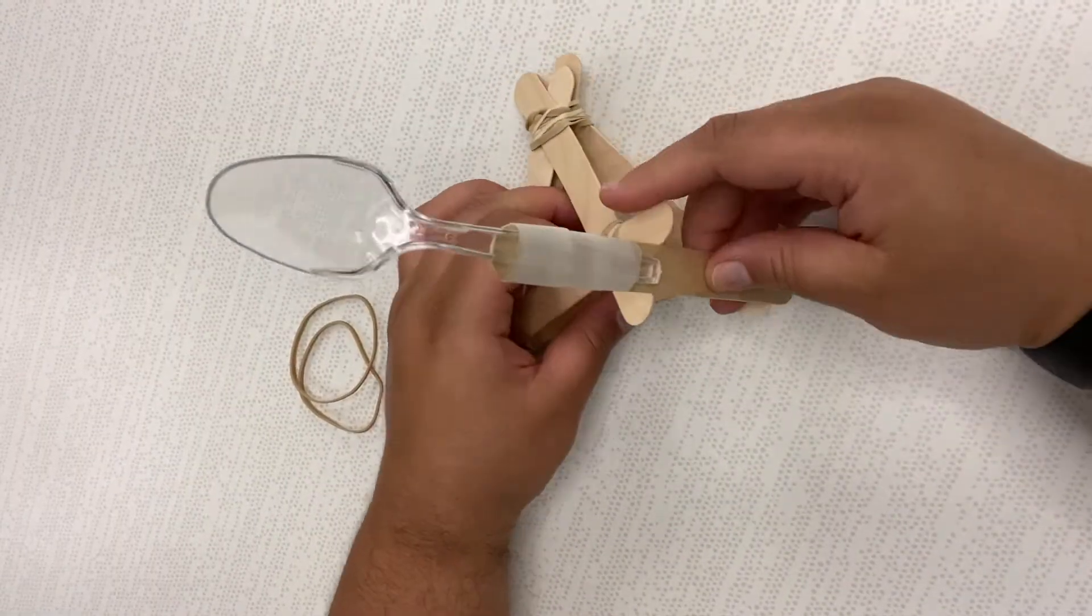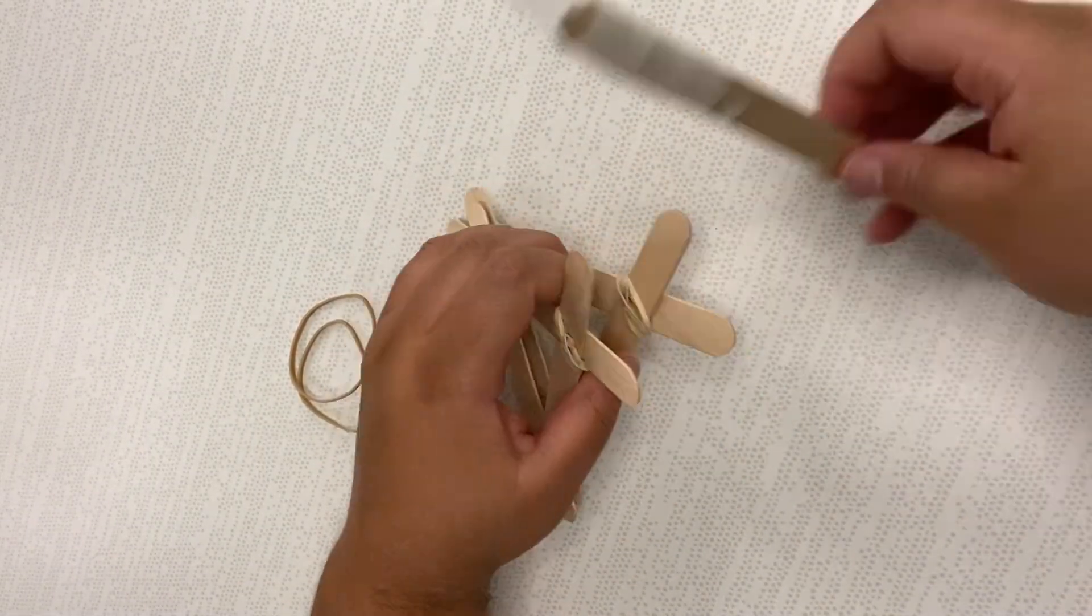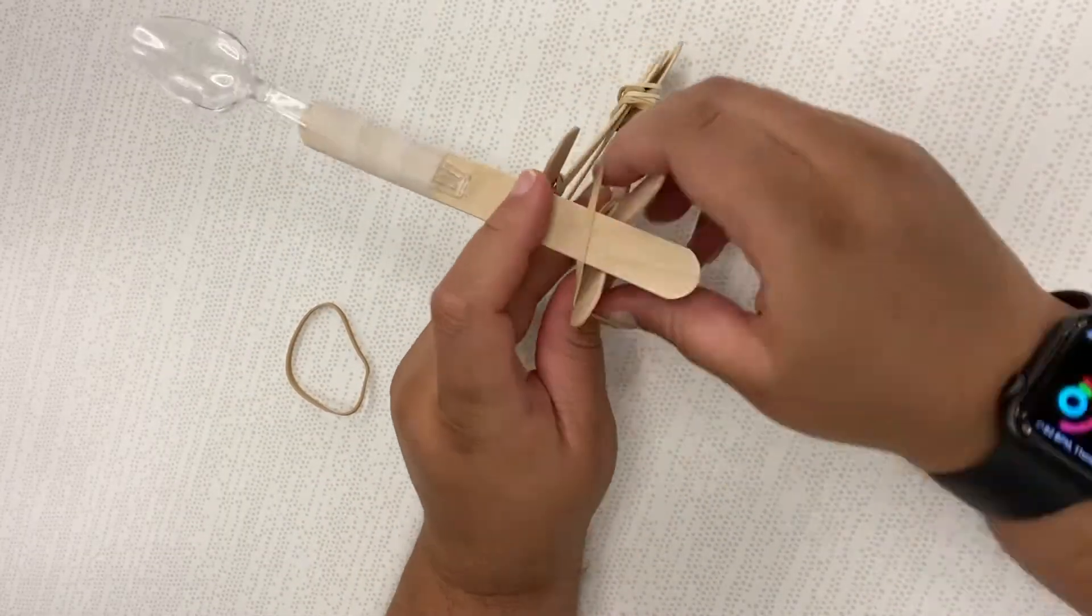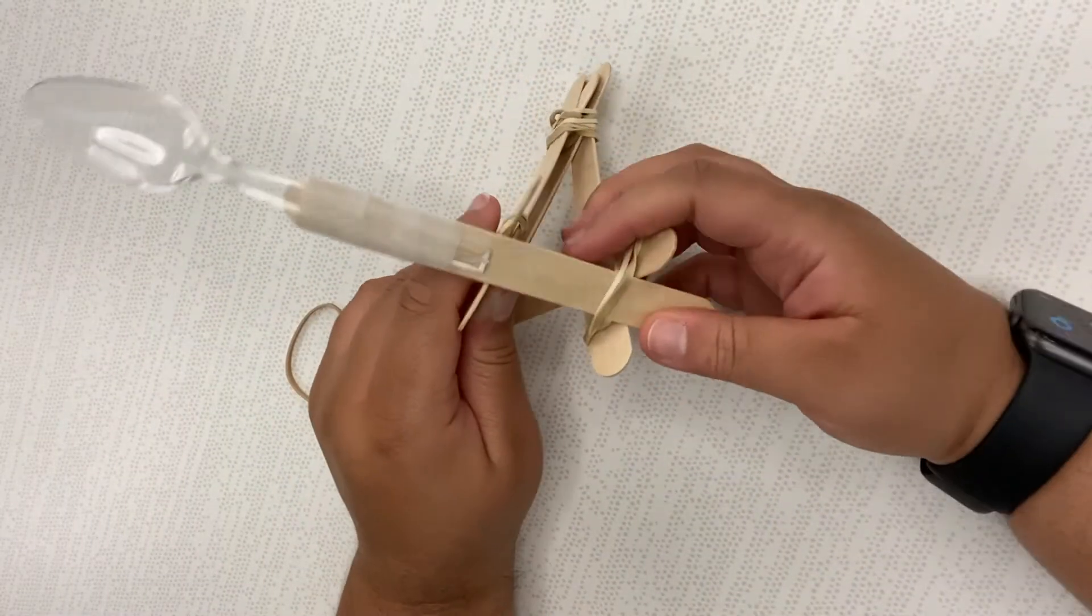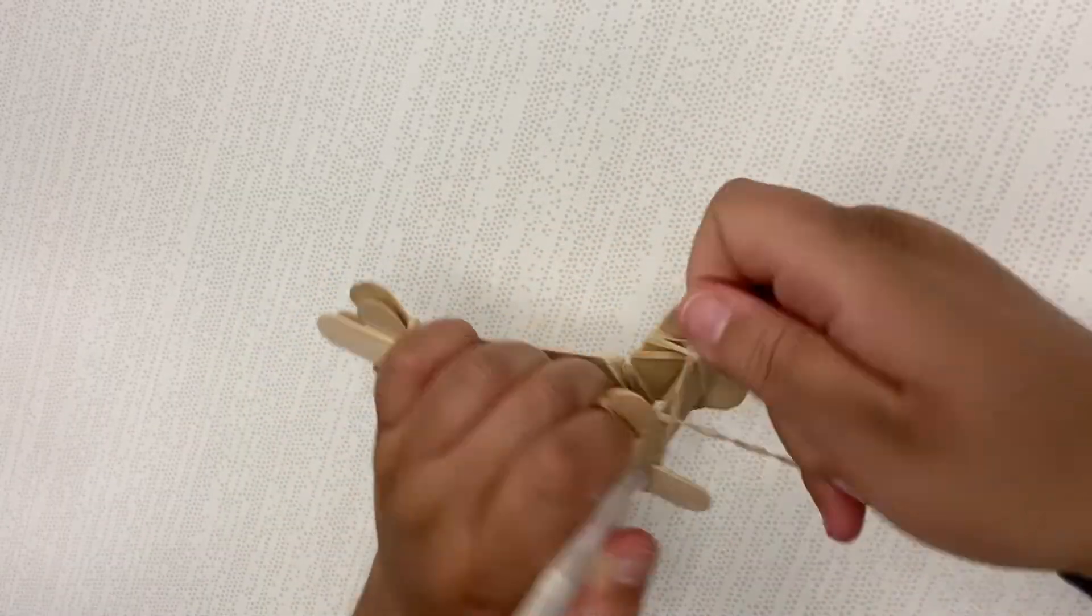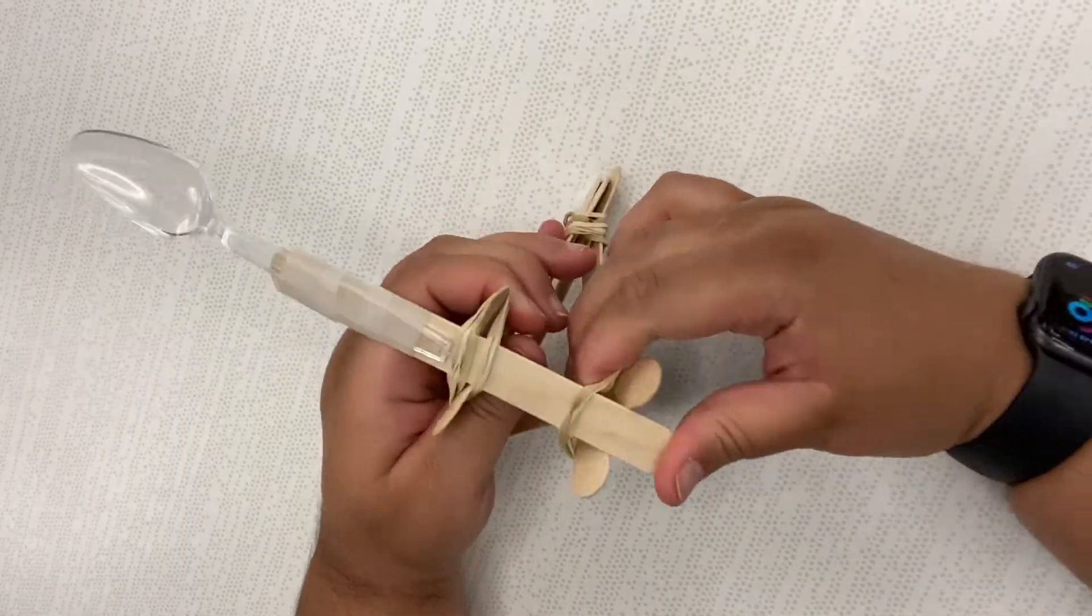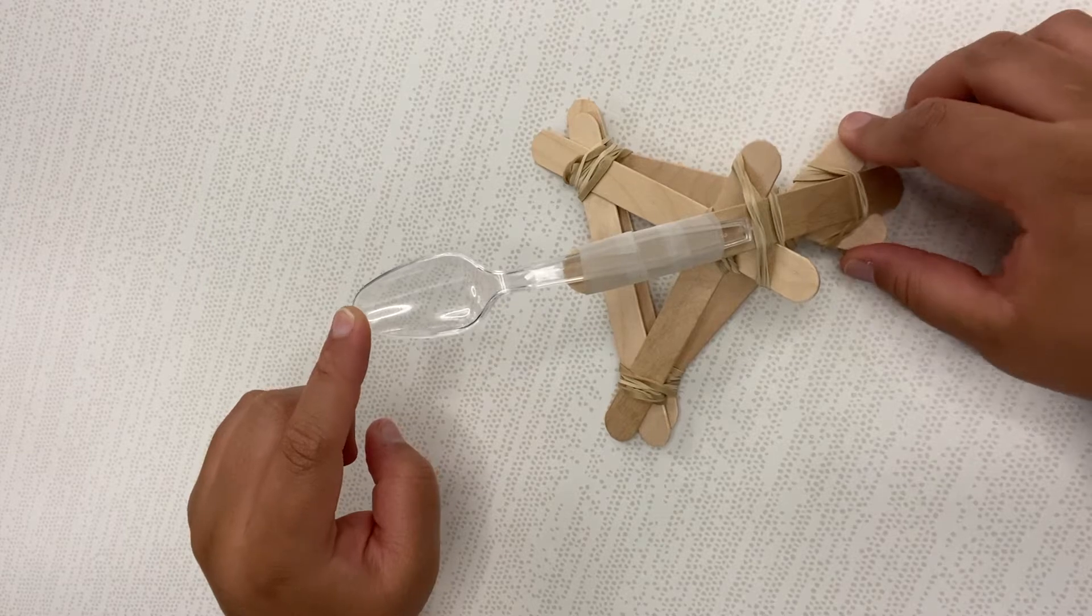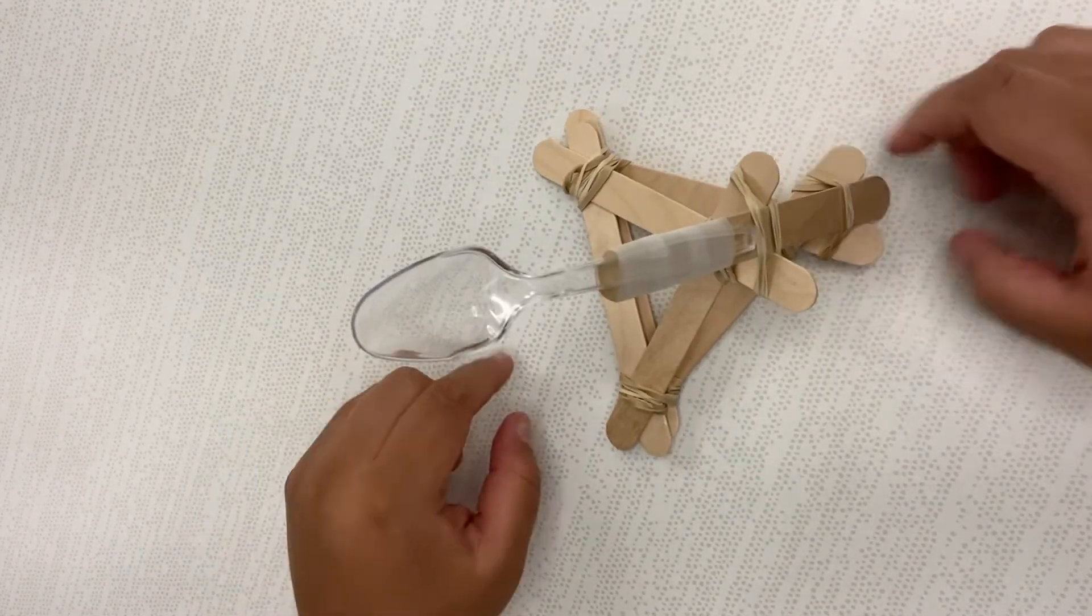On the open side, attach the stick spoon to the points of the triangle with two additional rubber bands. Voila! Your second catapult is complete!